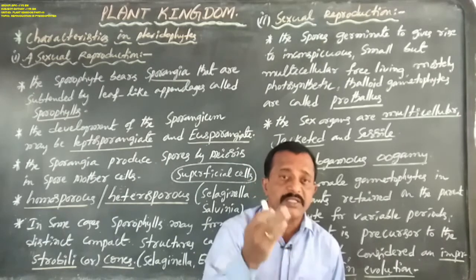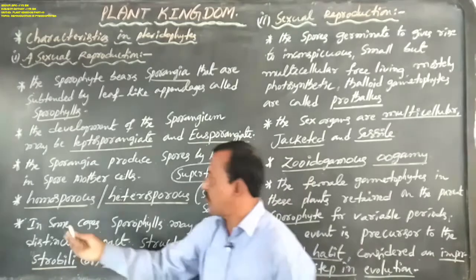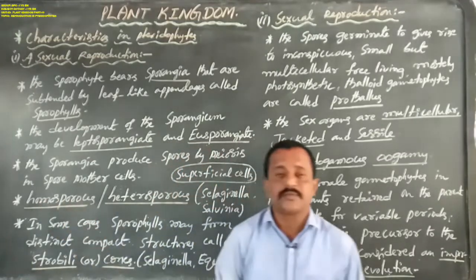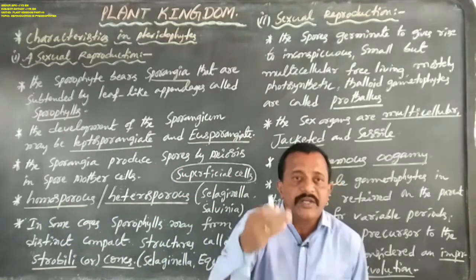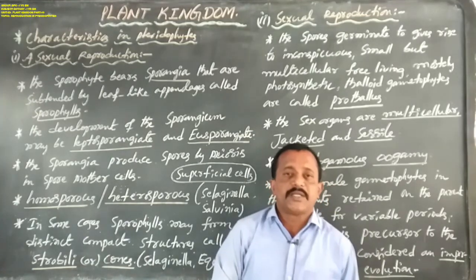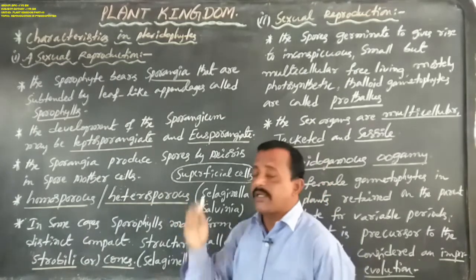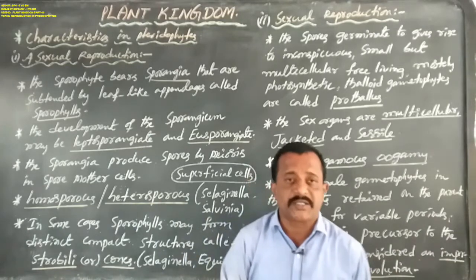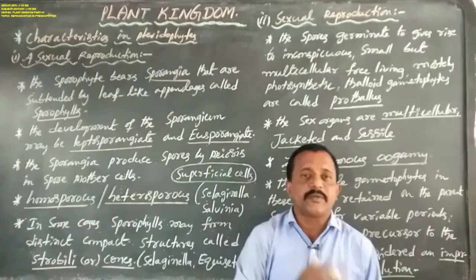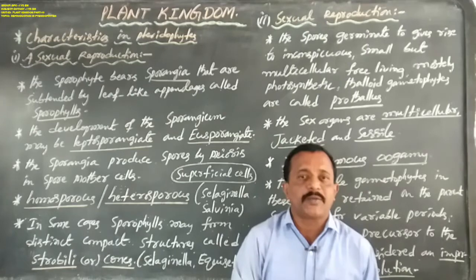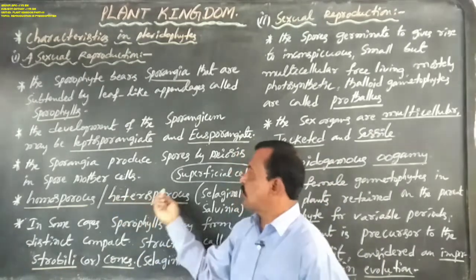These spores may be similar in size, which is known as homospores. Some spores are of different kinds — some are smaller in size and some are larger in size. The smaller ones are called microspores and the larger ones are called megaspores or macrospores. This phenomenon is known as heterospory.